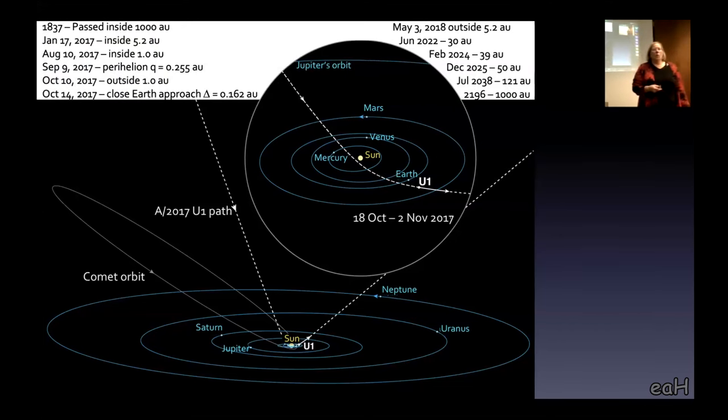It passed by the Earth. And it actually got very close to the Earth, about 63 Earth-Moon distances. And so we didn't discover it till afterwards. People say, well, couldn't you have seen it sooner? To see it sooner, you would have had to have been looking towards the sun.